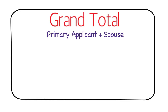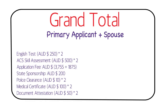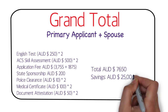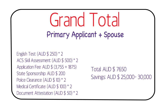For a couple — primary applicant and spouse — you pay the English test for both. If the spouse also needs to be assessed through ACS you pay that too, but if you're not claiming points for their skill assessment you can skip it. The application fee adds an additional AUD $1,875 for the spouse, plus police clearance, medical certificate, and document attestation for both. In total a couple would spend around AUD $8,000 and should have savings of around AUD $25,000 to $30,000.